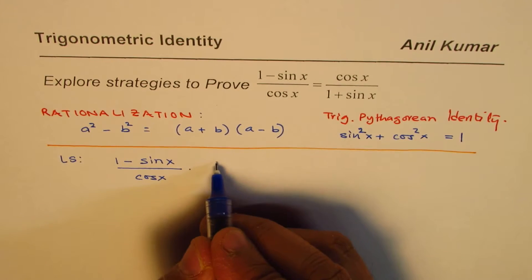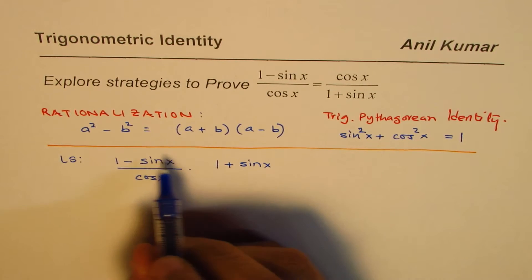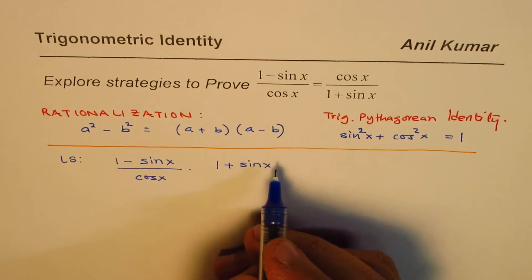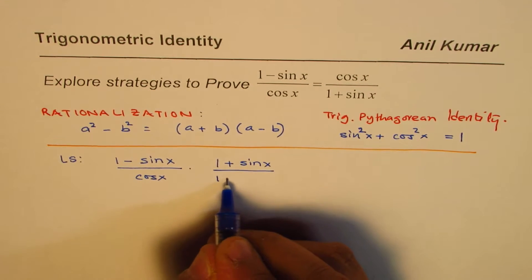So 1 - sin x conjugate is 1 + sin x. Do you see that? It is like (a - b)(a + b), right? So we applied this method. We multiply and divide by 1 + sin x, exactly the same terms. Multiplying by 1 makes no difference.